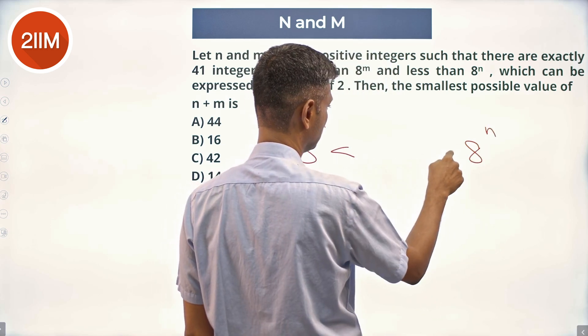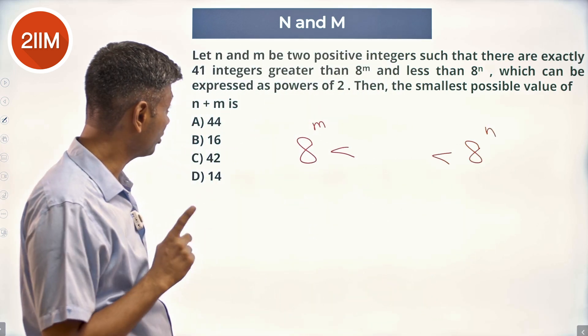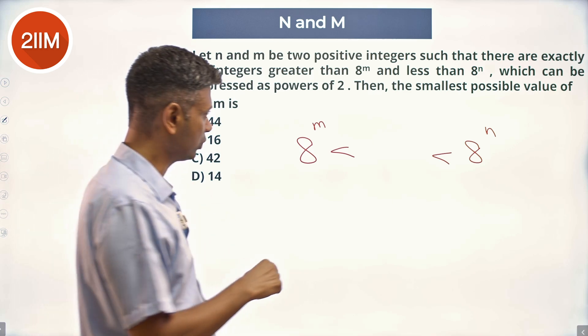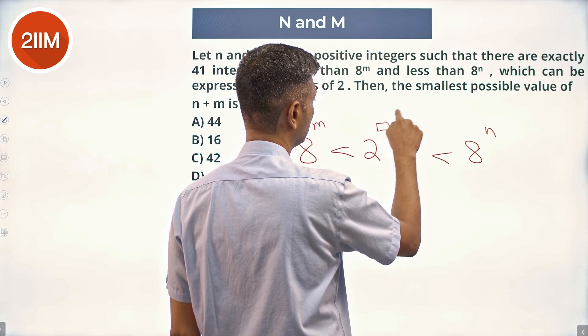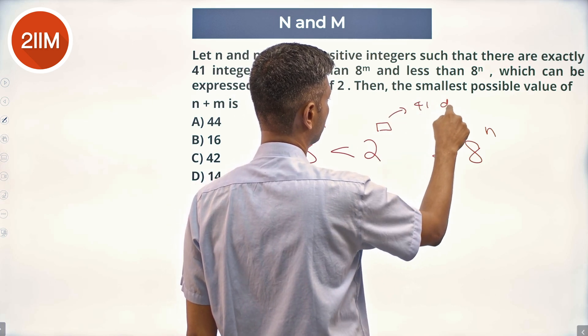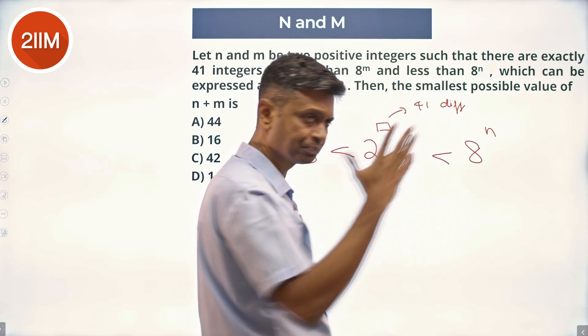41 integers that can be expressed as powers of 2. So this is 2 power something, 41 different values.